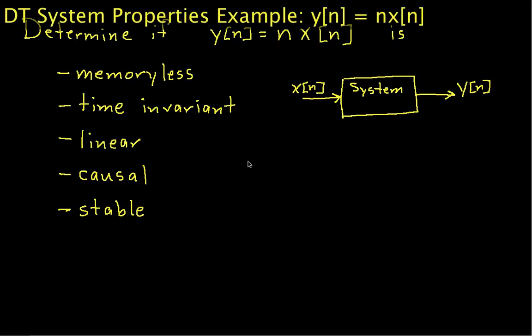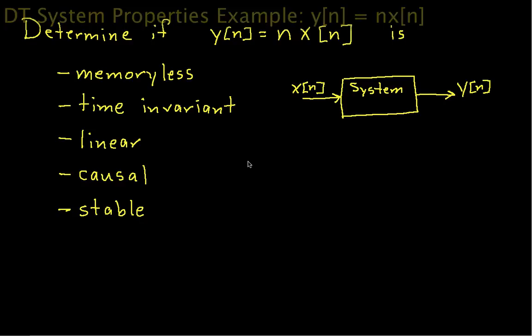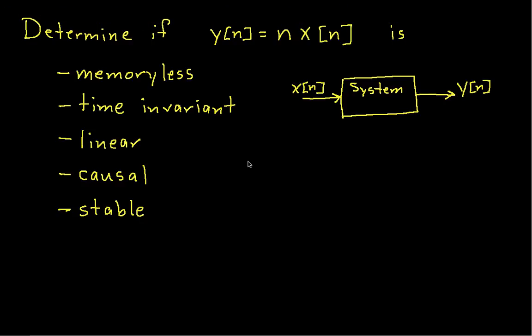Hello, and welcome to this video in which we determine the system properties of a discrete time system. In particular, we'll look at the discrete time system defined by the equation y of n equals n times x of n. Our goal is to determine whether or not this system is memoryless, time invariant, linear, causal, and stable. So let's get started.